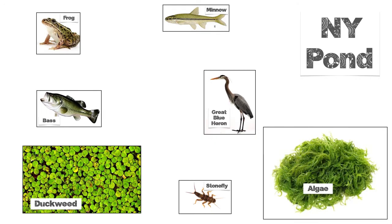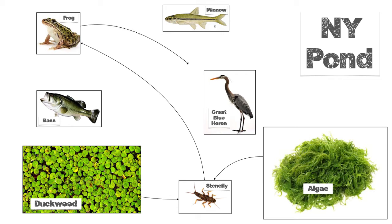Here's a New York State pond. I've got duckweed, algae, stoneflies, great blue herons, bass, frog, and minnow. The duckweed is being eaten by the stonefly, and the algae is also being eaten by the stonefly — so I draw the arrows towards it. Now what eats the stonefly? That would be a frog. The frog can also be eaten by the great blue heron, or it can be eaten by the bass. The bass can be eaten by the great blue heron. And this little minnow can eat the duckweed, and it could be eaten then by the bass, which is also eaten by the blue heron.